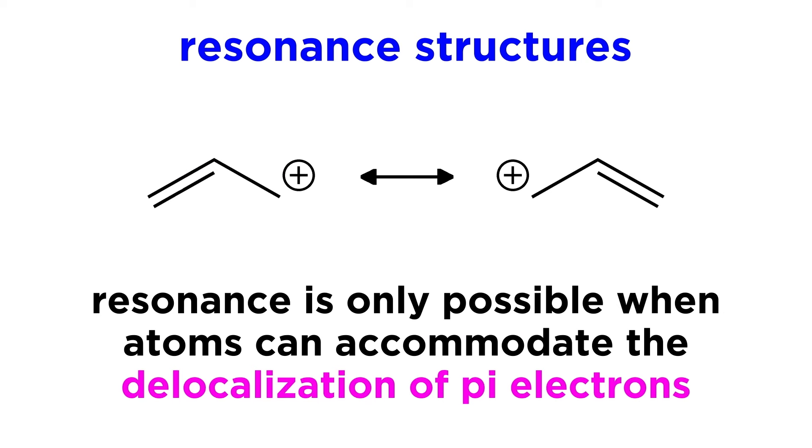One of the main things to keep in mind is that resonance is only possible when atoms can accommodate the delocalization of pi electrons, which are found in pi bonds and lone pairs, not the sigma electrons found in sigma bonds or single covalent bonds.